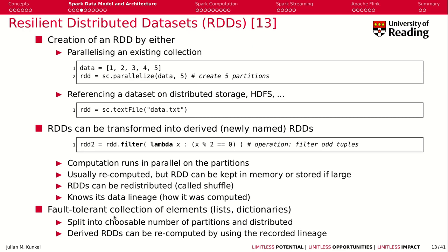An RDD knows its data lineage — it knows how it was computed. So RDD2 knows it comes from RDD1 and which operator was applied. This gives you a fault-tolerant collection of elements (lists or dictionaries), and you can recompute RDD2 from the source by knowing its origin and reapplying the operation.